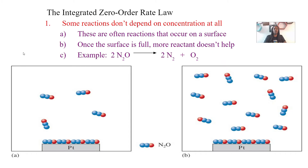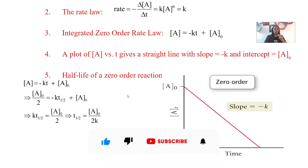Lastly, zero order rate laws. Some reactions do not depend on concentration at all. One example is a surface reaction: platinum reacts with a reactant like N₂O to produce nitrogen and oxygen. Once the catalyst surface is full, extra reactants won't help produce more products, so the rate is not dependent on concentration. This is how we get zero order reactions.